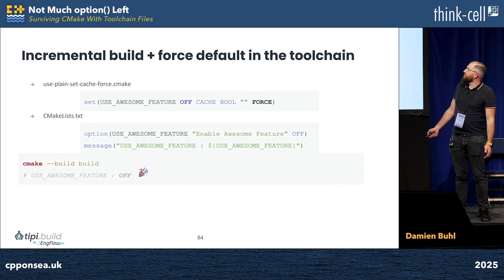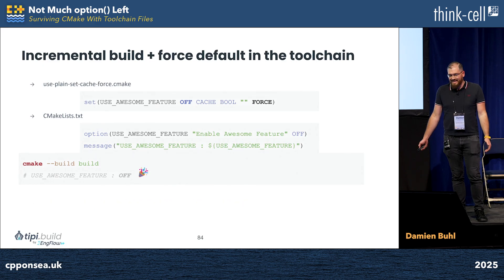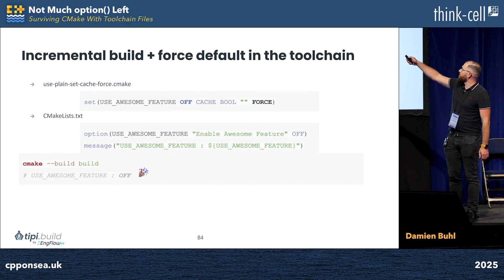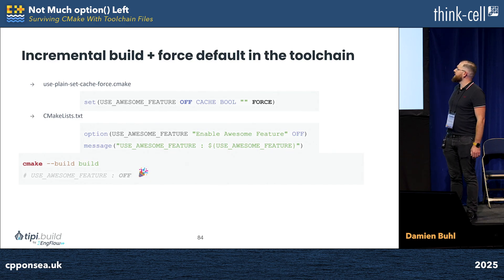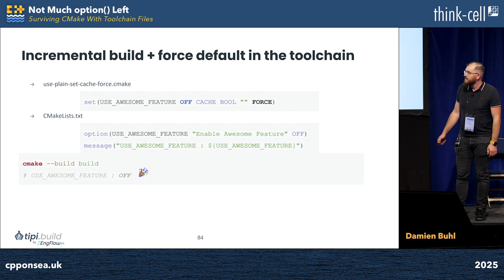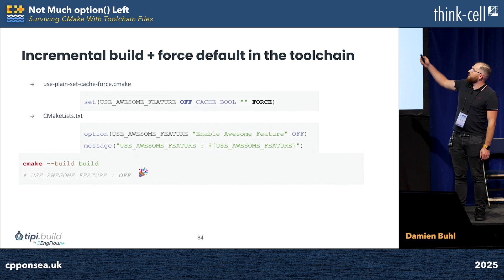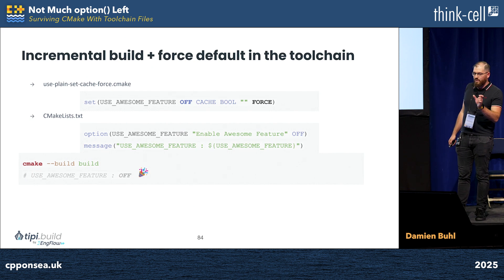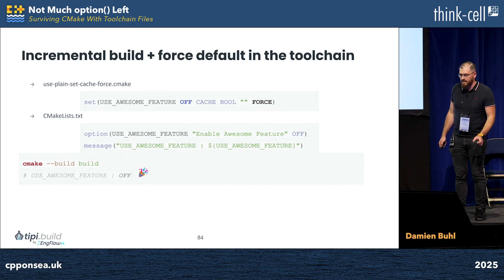What can we do about that? I can basically use FORCE — set it with CACHE BOOL FORCE — then it's sure it will be set and always overwritten. This way it always works on older versions of CMake, and you can be sure that the value in your toolchain file will be taken.